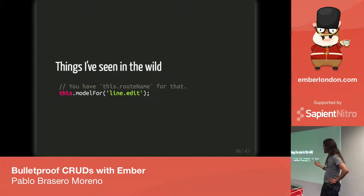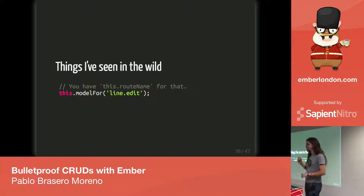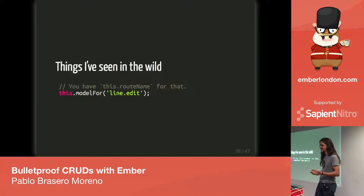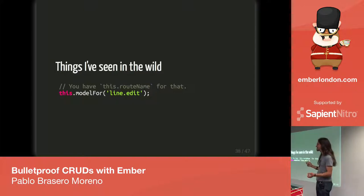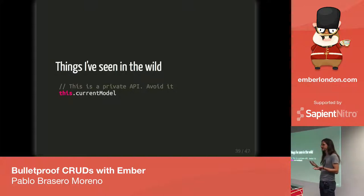The difference is that I was feeding a string literal instead of something that updates automatically if I move things around or change names. Also, if I misspell something — as I actually did the first time, writing 'line' instead of 'lines' — misspelled strings are harder to track down. If I misspell modelFor, JavaScript will quickly tell me that function doesn't exist. You should also avoid using this.currentModel, which is a private API.